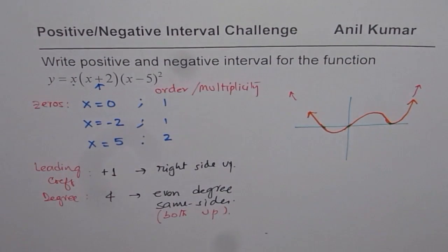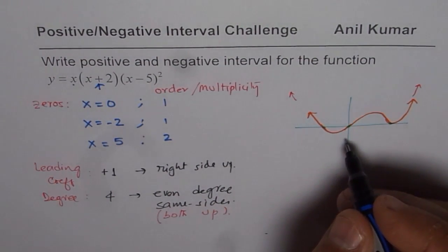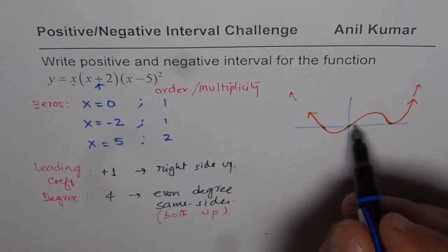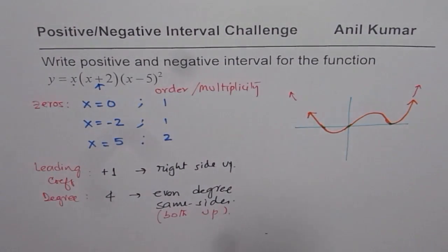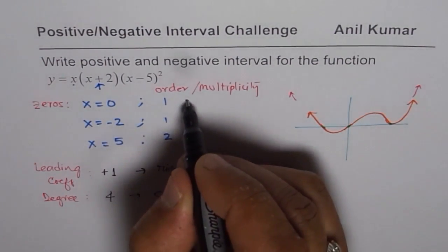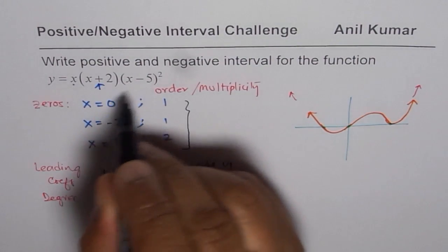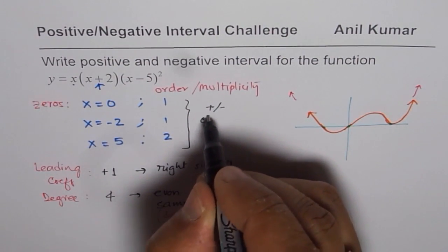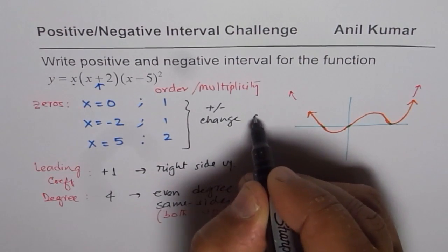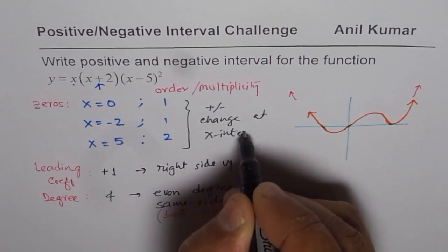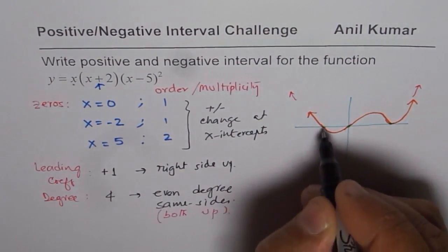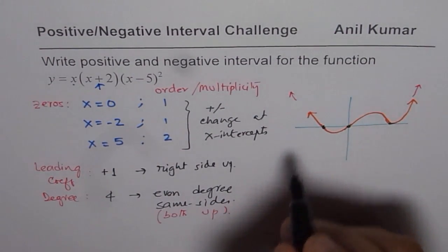So that is the kind of graph for the given function. So it is a quartic function. And now we can easily write down positive and negative intervals for this function. As we know, these positive intervals, they actually could change only at zeros or x intercepts. So positive or negative, they could change at x intercepts. That is a concept. So if you see at these x intercepts, it changes.